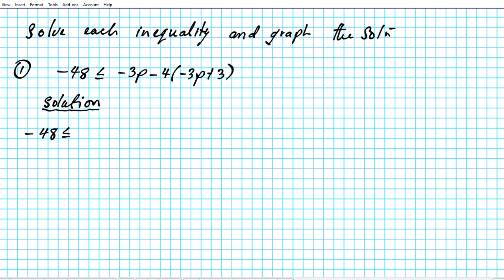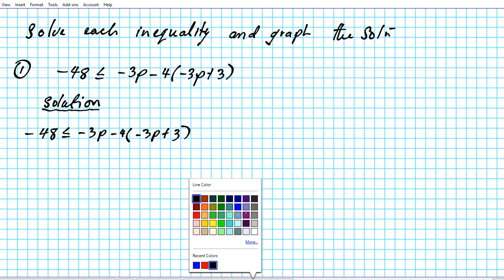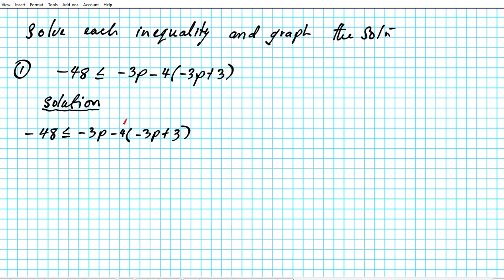We have negative 48 ≤ negative 3p − 4(−3p + 3). On the right side we have a parenthesis, so we get rid of it by distributing. Negative 4 distributes to both terms in the parenthesis — don't forget to distribute the negative sign too. That results in: negative 48 ≤ negative 3p + 12p − 12.